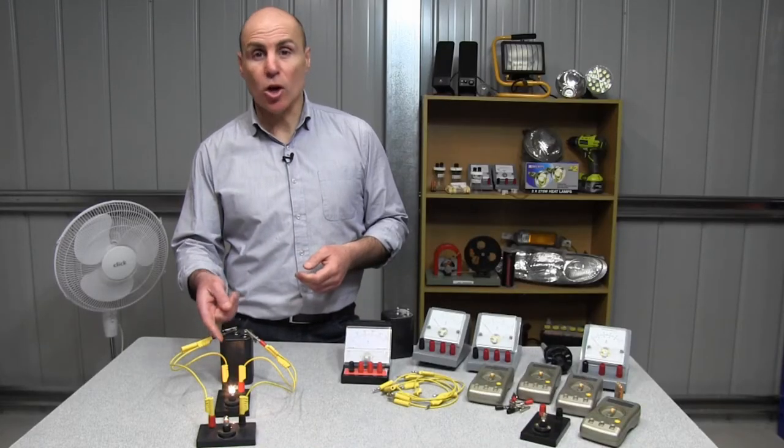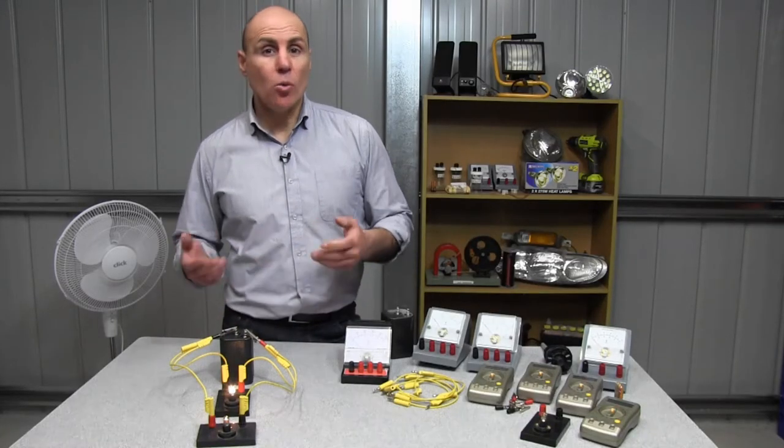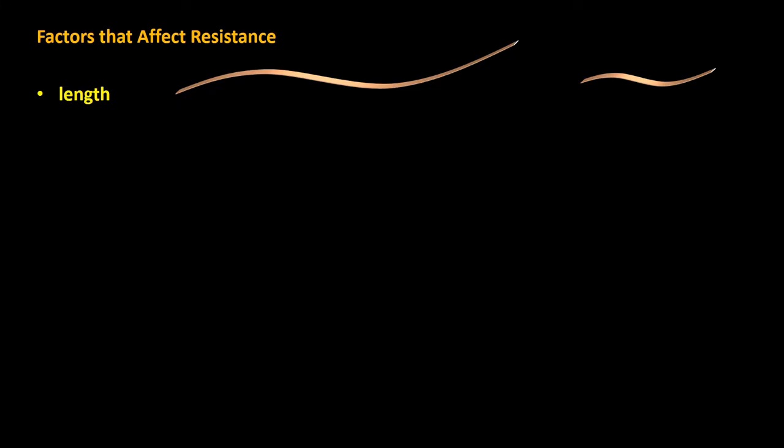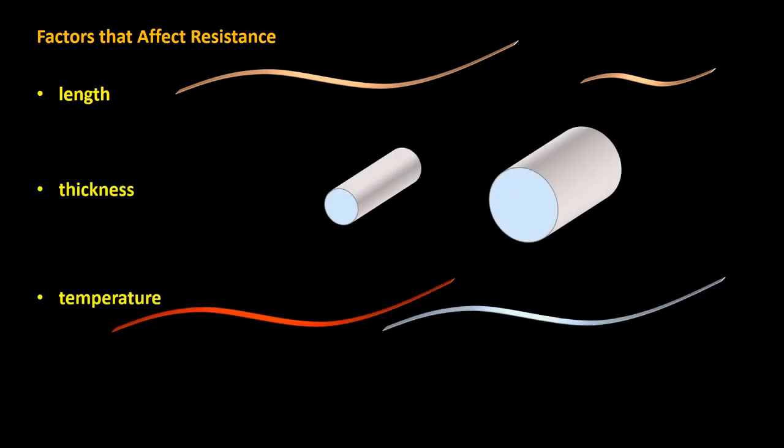So, why do the two light globes have different resistances? Well, the resistance of a wire is affected by four main factors: length, thickness, temperature, and the nature of the material that it's made of.